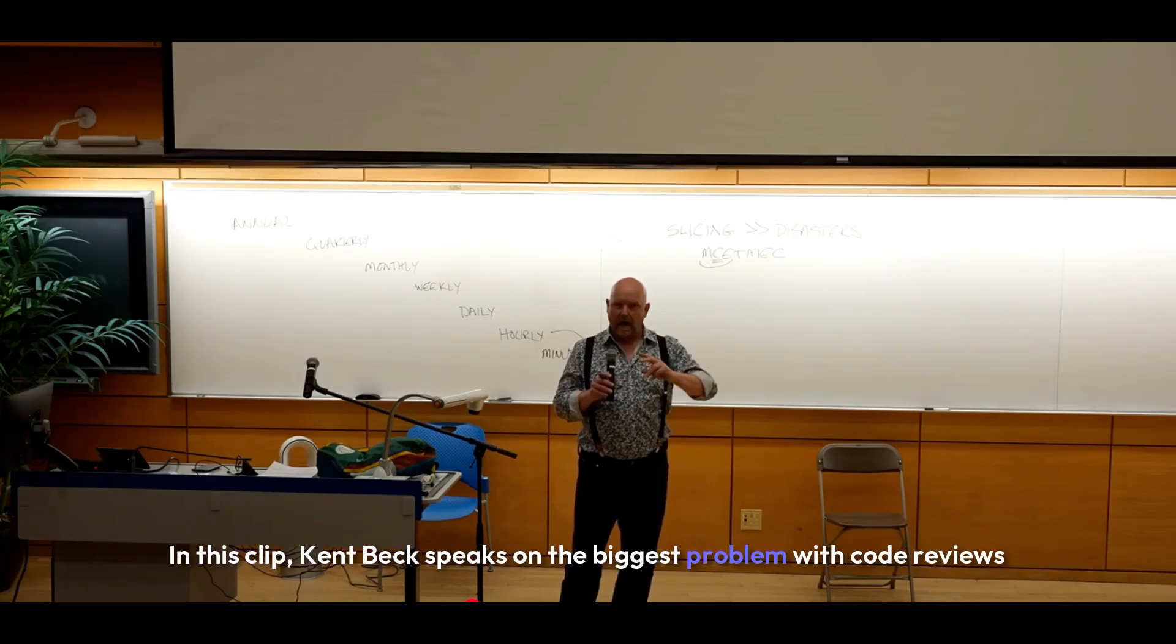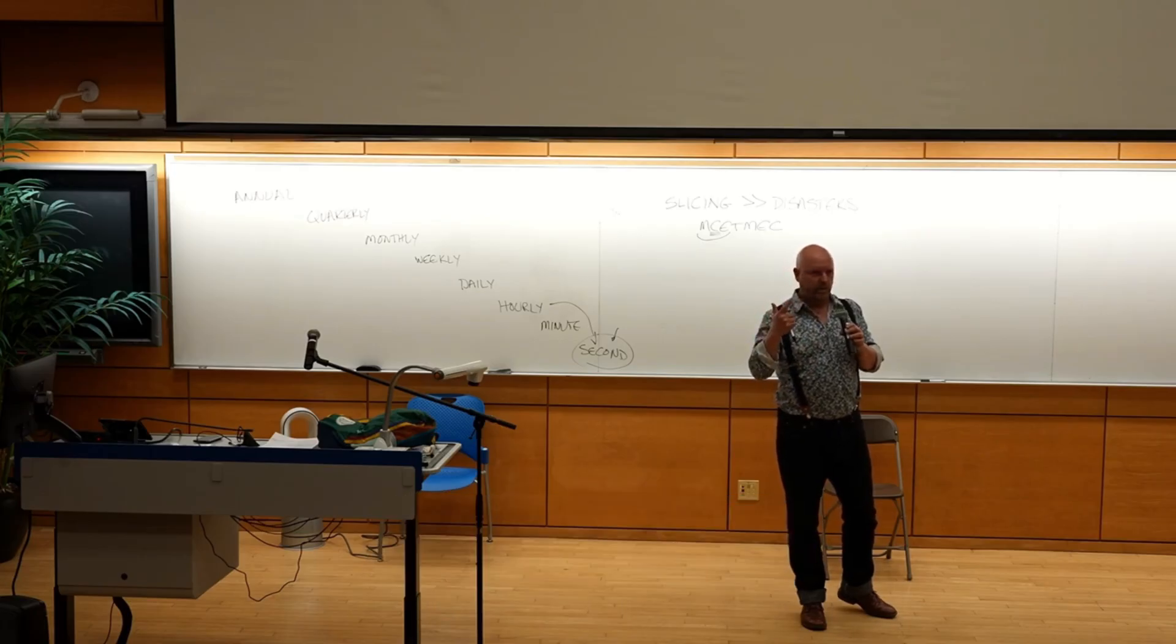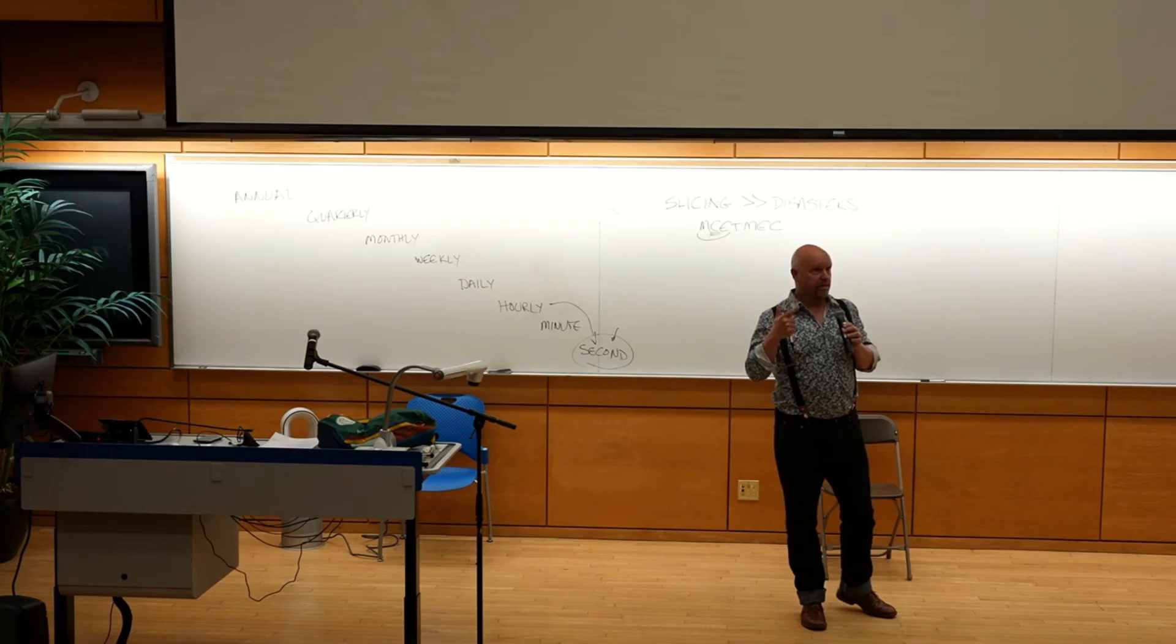In this clip, Kent Beck speaks on the biggest problem with code reviews and the best way to deal with it. The problem with code reviews is they're blocking and synchronous. Both of those things together mean that they're very, very expensive.